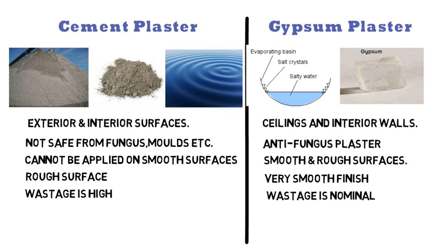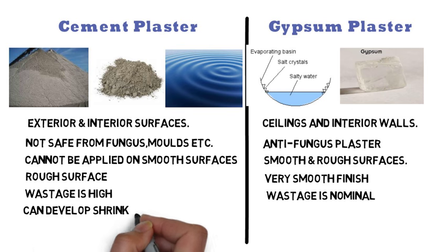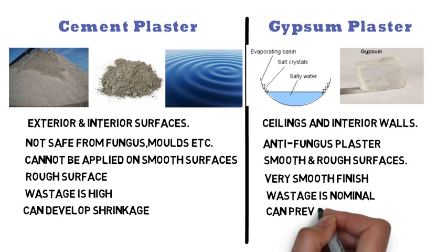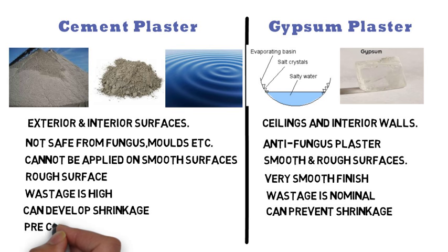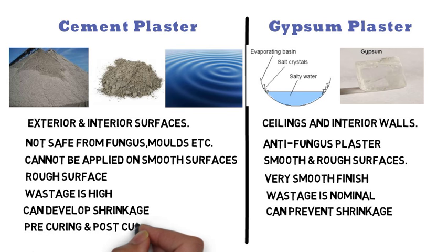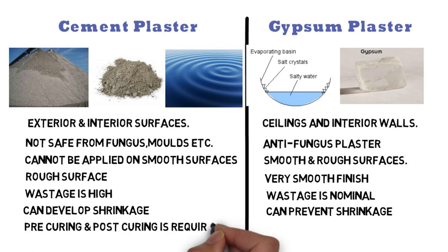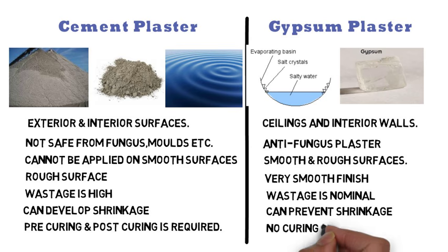Cement plaster can develop shrinkage because it has low tensile and flexural strength. Gypsum plaster can prevent shrinkage because it has high tensile and flexural strength. In case of cement plaster, pre-curing and post-curing is required. For gypsum plaster, no curing is required.